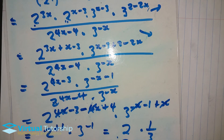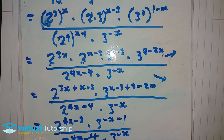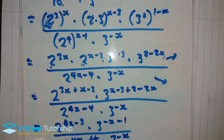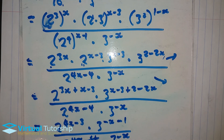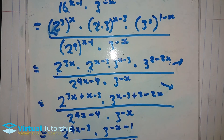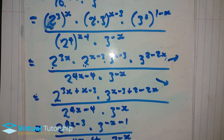So whenever multiplying and dividing powers with numerical bases, this is the method to apply. First, change all powers to prime bases. Then solve the brackets. Pay attention to numerator and denominator, multiply powers with the same base by adding exponents, and finally subtract exponents when dividing powers with the same base. Thanks for watching.